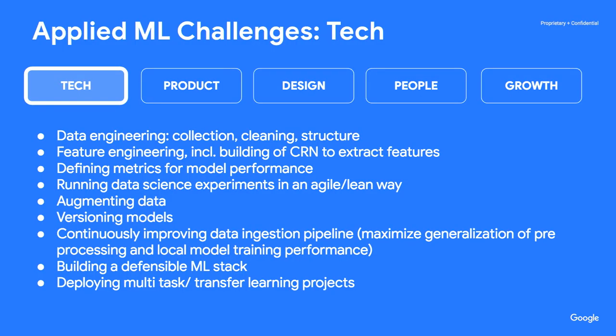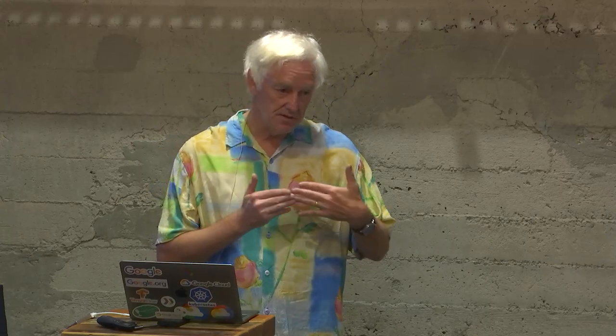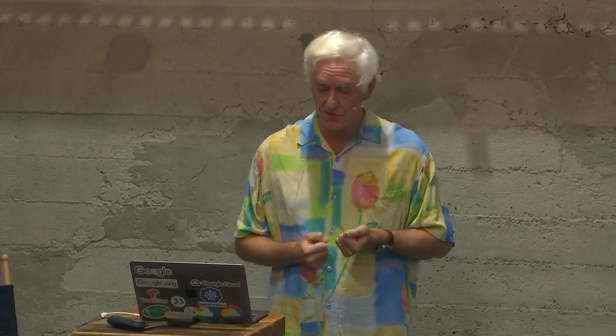We think of the challenge in terms of five categories. First: what's the technology — getting used to using all these new tools, making the data flow, figuring out which models make sense. And then deploying that technology — how does having a cool technology fit into a product that makes sense for your customers?